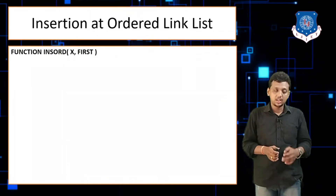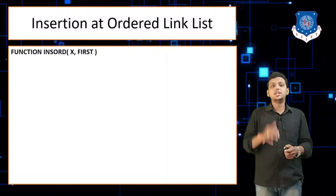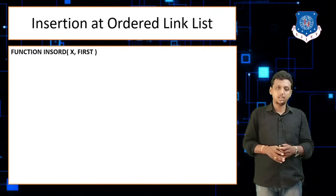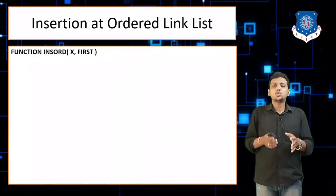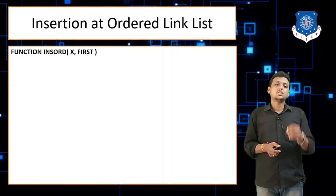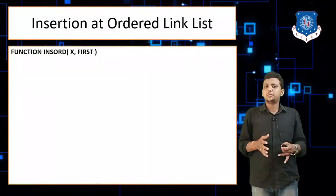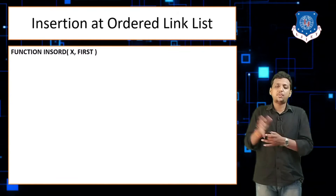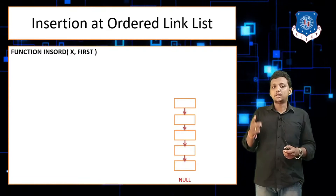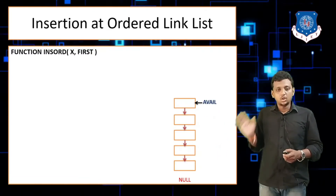The function takes parameters first, link, and x. X represents the value to be inserted in the new node, and first shows the value of the first pointer — that is the existing first node of the linked list. Now let's begin with the algorithm. The first step is to check the underflow condition, but before that we need to take from the availability stack.